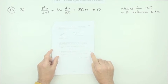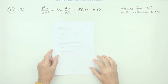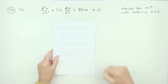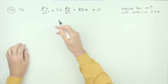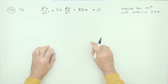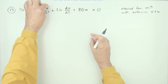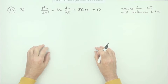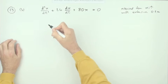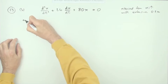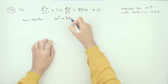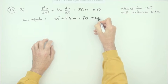Part B, for six marks: solve this second order differential equation given the initial conditions — released from rest with an extension of 0.2 meters. This is a homogeneous second order ODE since there's no term involving t alone on the right-hand side. The auxiliary equation is m² + 24m + 80 = 0.